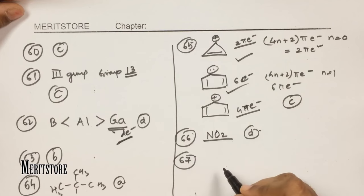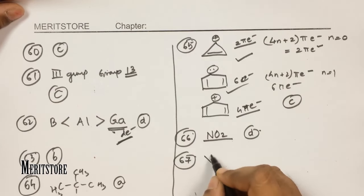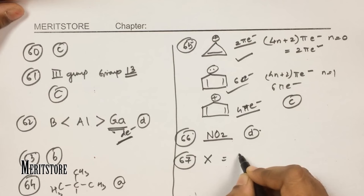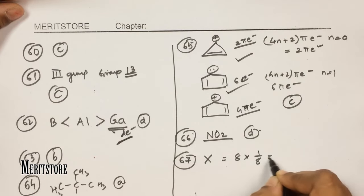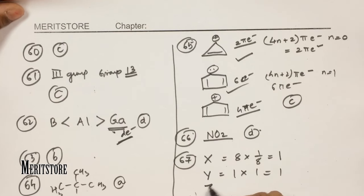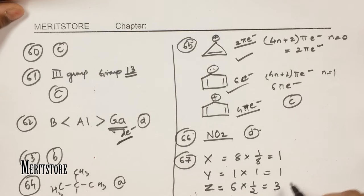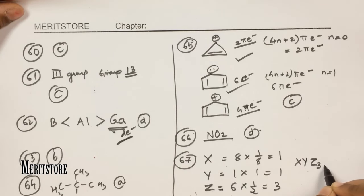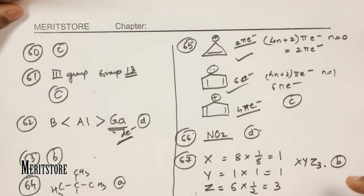Question number 67: a solid compound contains X, Y, Z atoms where X occupies corners, Y is in the body center, and Z is on faces. X: 8 corners × 1/8 = 1. Y: 1 body center × 1 = 1. Z: 6 faces × 1/2 = 3. The formula is XYZ₃, so option B.